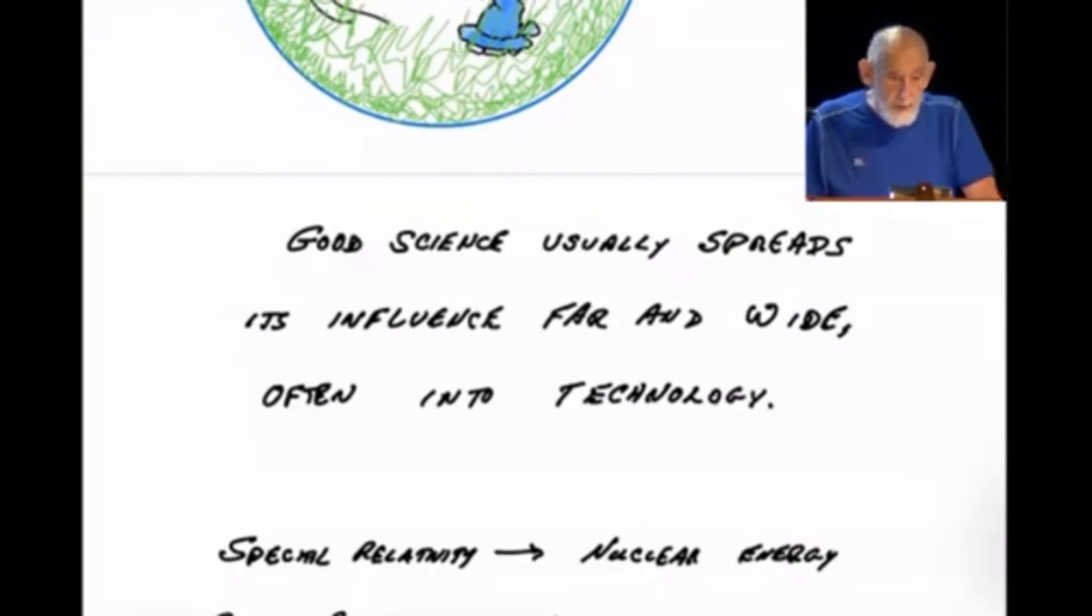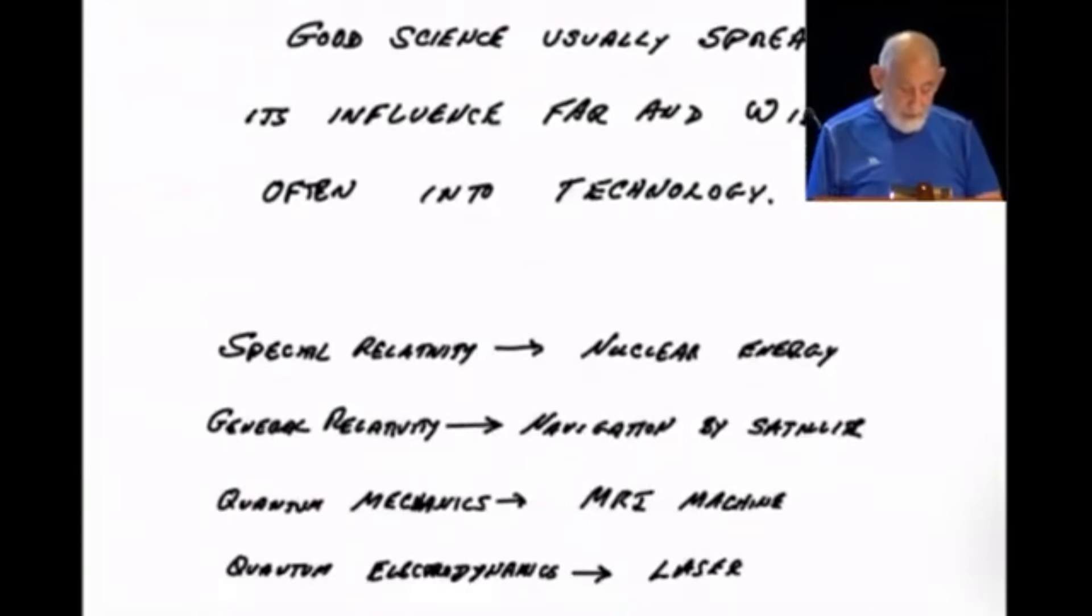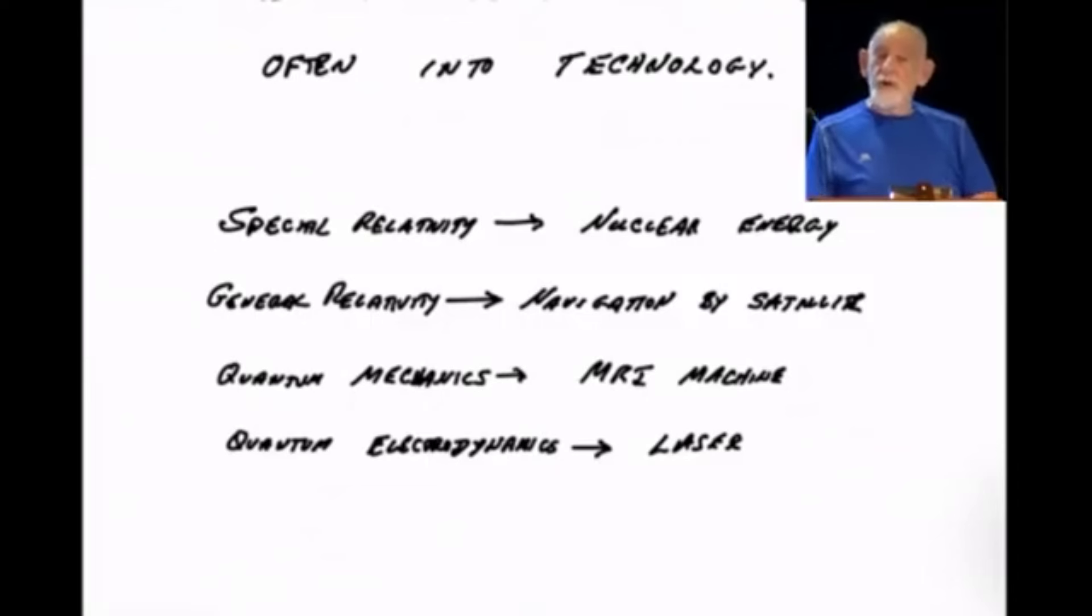Of string theory, quantum gravity has been the victim of an enormous amount of criticism. The criticism, which, first of all, I think is unjustified, but what does it have to do with? The criticism, I would say, stems from the fact, and I think it is a fact, that good science almost always spreads its influence far and wide into many fields of not just physics, but even outside of physics, and in particular, into engineering, into technology. And that's a pattern that we've seen over and over and over again. Special relativity led to nuclear energy. General relativity, we use it for navigation by satellite, believe it or not. Quantum mechanics, the list of technological advances.